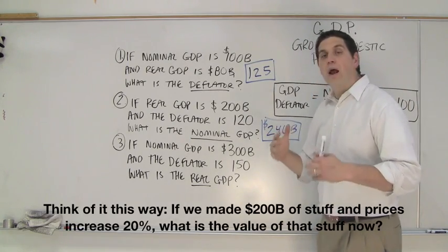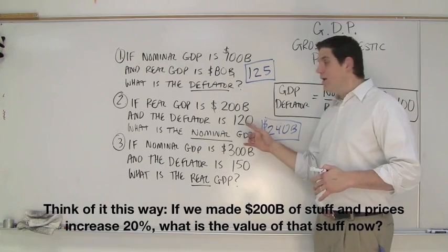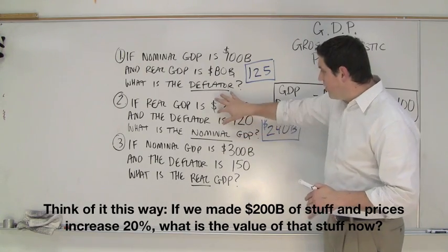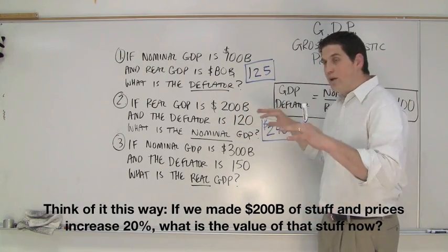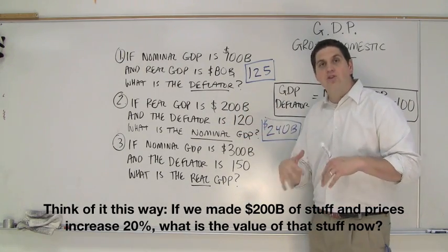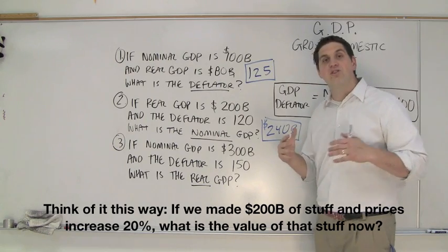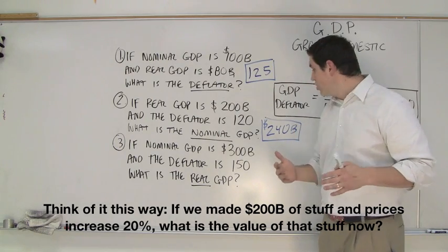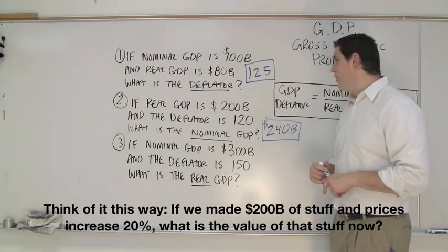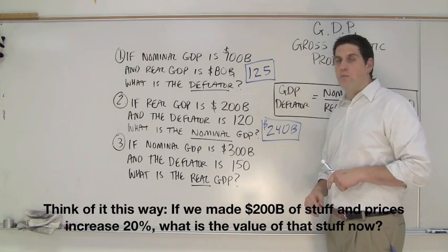In this case it's $240 billion — that's the nominal GDP. How did I get that? Prices increased 20%, and if the real GDP was $200 billion, what is 20% of $200 billion? The answer is $40 billion. So the nominal GDP must be $240 billion.